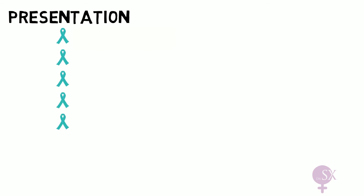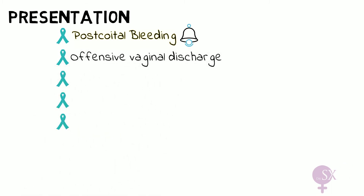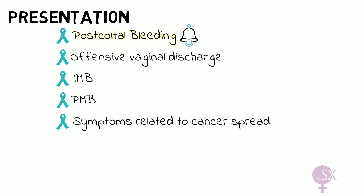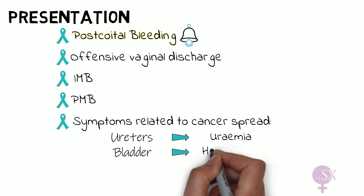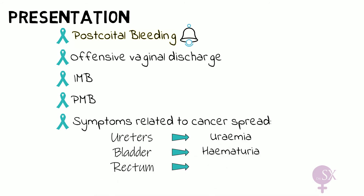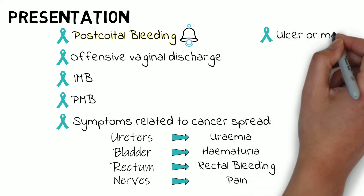How do these patients present? The main presenting complaint that should send alarm bells ringing is post-coital bleeding — that should immediately make you think about cervical cancer. Other possible symptoms include offensive vaginal discharge, intermenstrual bleeding, and postmenopausal bleeding. Patients may also present with symptoms related to cancer spread in advanced disease: ureteric invasion may cause uremia, bladder invasion hematuria, rectal invasion rectal bleeding, and nerve invasion pain. On examination, one might find an ulcer or cervical mass.